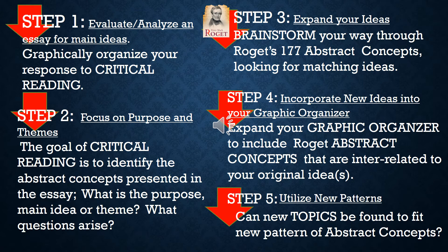Here's a five-step recap of the exercise we've just completed. First, you want to complete a critical reading of the assigned essay — in this case, The Jerk. Step two, you want to be looking for abstract concepts devoid of details, no specifics, just very general abstract concepts that are undefined and open to interpretation, and give your interpretation of them. Step three is you want to try to strengthen your first interpretation of the abstract concepts in the essay by brainstorming your way through Roger's 177 abstract concepts, looking for matching ideas.